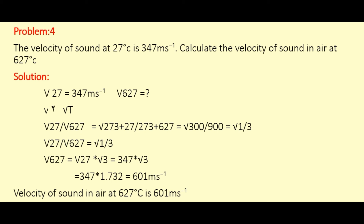So the ratio of V27 by V627 equals root of 1 by 3. From this we calculate the velocity of sound at 627 degrees Celsius. V627 equals V27 multiplied by root 3. V27, the velocity at 27 degrees Celsius, is 347 meter second minus 1 as given. So 347 multiplied by root 3. The value of root 3 is 1.732. Multiplying with 347, we get the answer 601 meter second minus 1. So the velocity of sound in air at 627 degrees Celsius is 601 meter second minus 1.